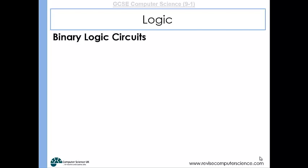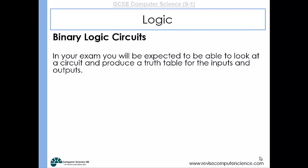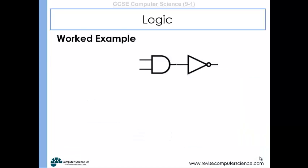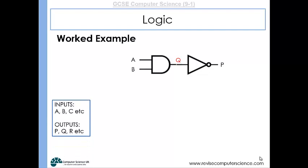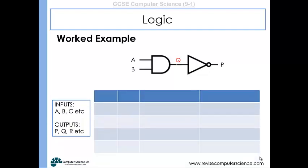Quite often in your GCSEs, you'll be given a logic circuit — a combination of these gates joined up — and you'll be asked to produce a truth table for the inputs and the outputs. Whenever you get a logic circuit, I'd always label the inputs, label the output, and also label some intermediate outputs. This circuit has an AND gate which produces an output that will be the input for the NOT gate. So I've got my inputs and outputs all labelled.